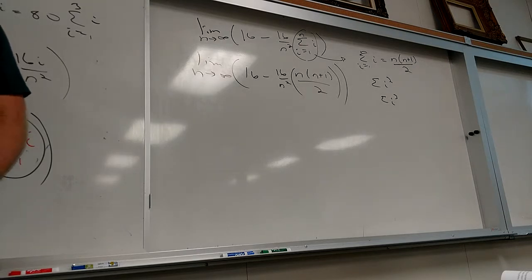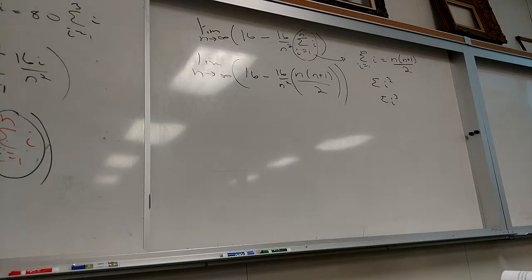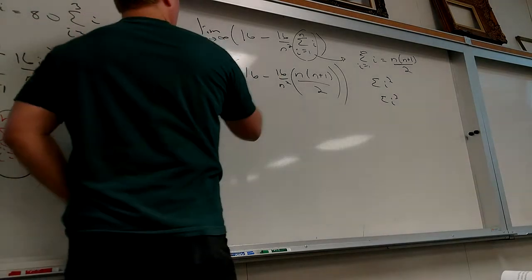16 minus 16 over n squared times n times n plus 1 over 2. Pretty much every function you have to do this to, the type of things we're doing right now is going to happen to you. So basically, this format is going to happen. What's going to happen that's going to make it worse? They're going to give you a function that's worse than what we're working with. But the steps aren't going to change.